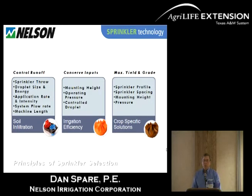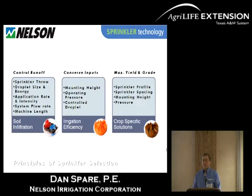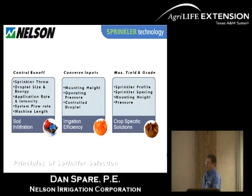Sprinklers that you use on center pivots, if properly selected and used, can control runoff and help with the correct infiltration into the soil. In this general area, I understand that you have a lot of clay loam soils. I'm familiar with a lot of sandy soils in the northwest part of New Mexico, and it varies all over the place — so not one sprinkler selection is a catch-all. It has to be carefully determined what works best.